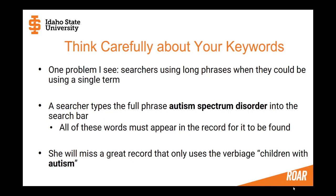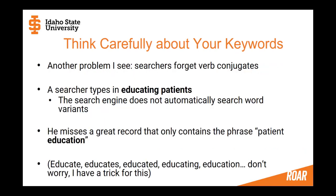Really think carefully about these keywords. One problem I often see is searchers using long phrases when they could use a single word. If a searcher types the full phrase autism spectrum disorder, they're asking the computer to find all three words. Many journal articles are searched only by title and abstract and may just use autism — so the searcher misses a great record that only says children with autism without including spectrum disorder. Simplify, simplify, simplify. You can always add words to narrow your search, but start broad.